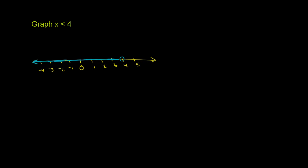So this right here is all of the values less than 4. And you could test it out. Take any value where there's blue. So there's blue over here. Negative 2. Negative 2 is definitely less than 4.